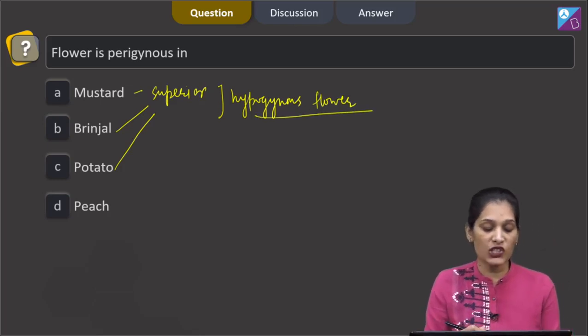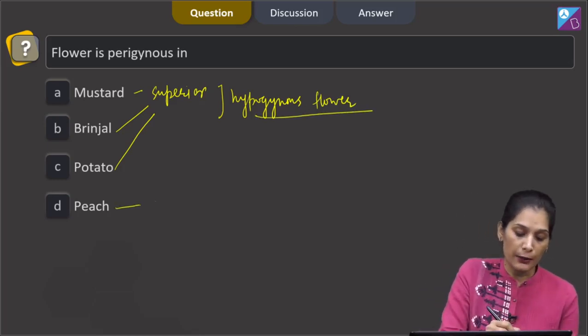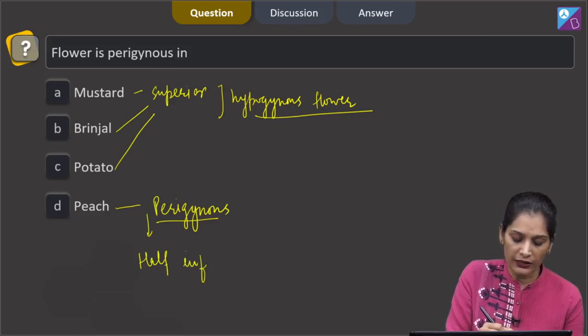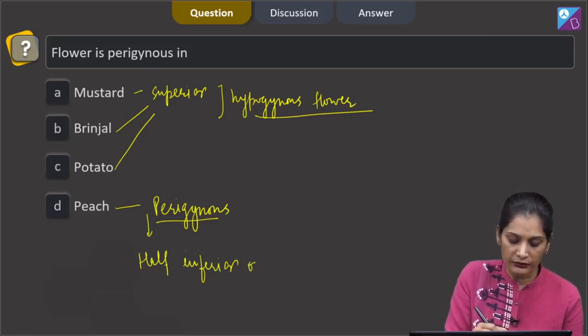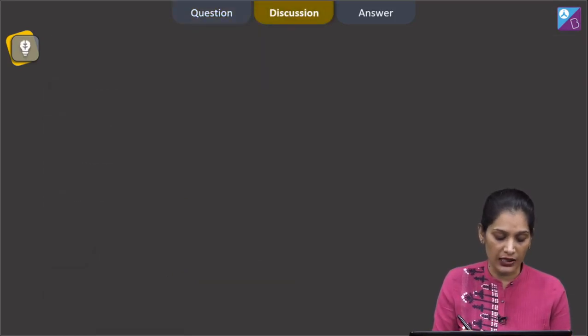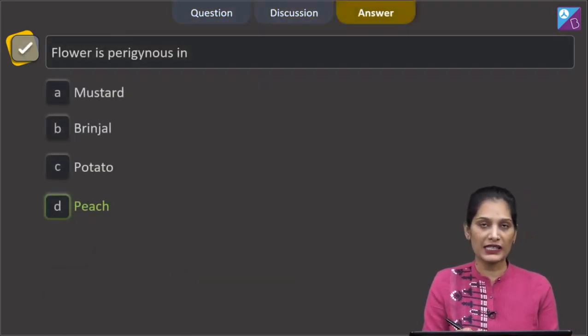In case of peach, the flower is perigynous as it has half inferior ovary. So the correct option for the given question is option D which says peach.